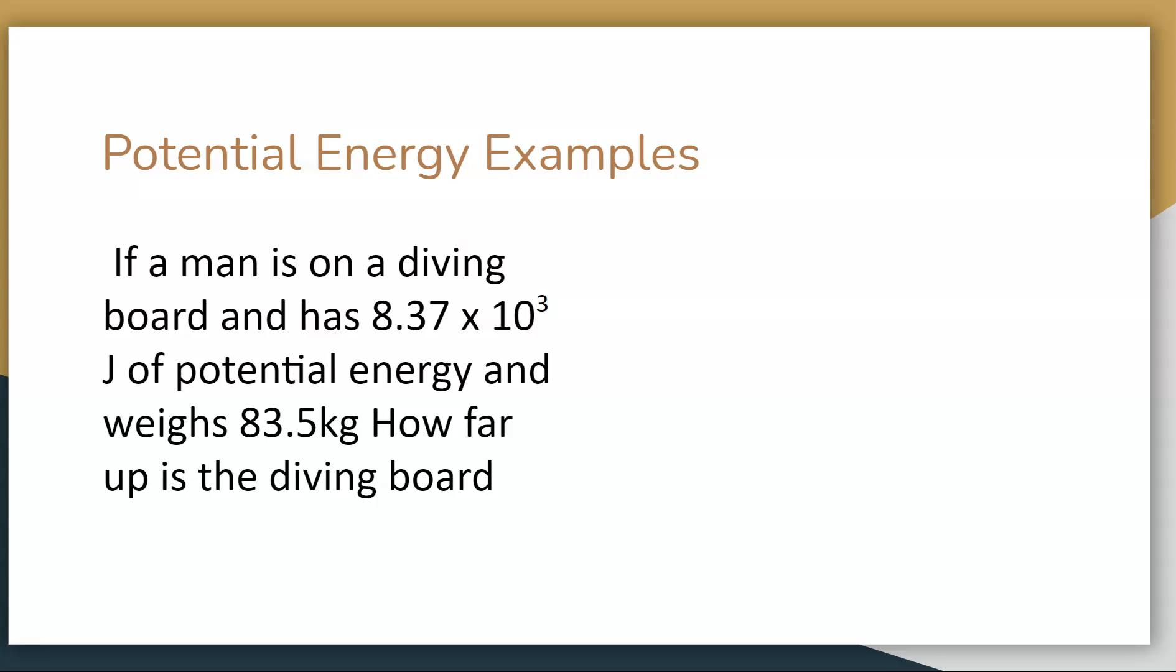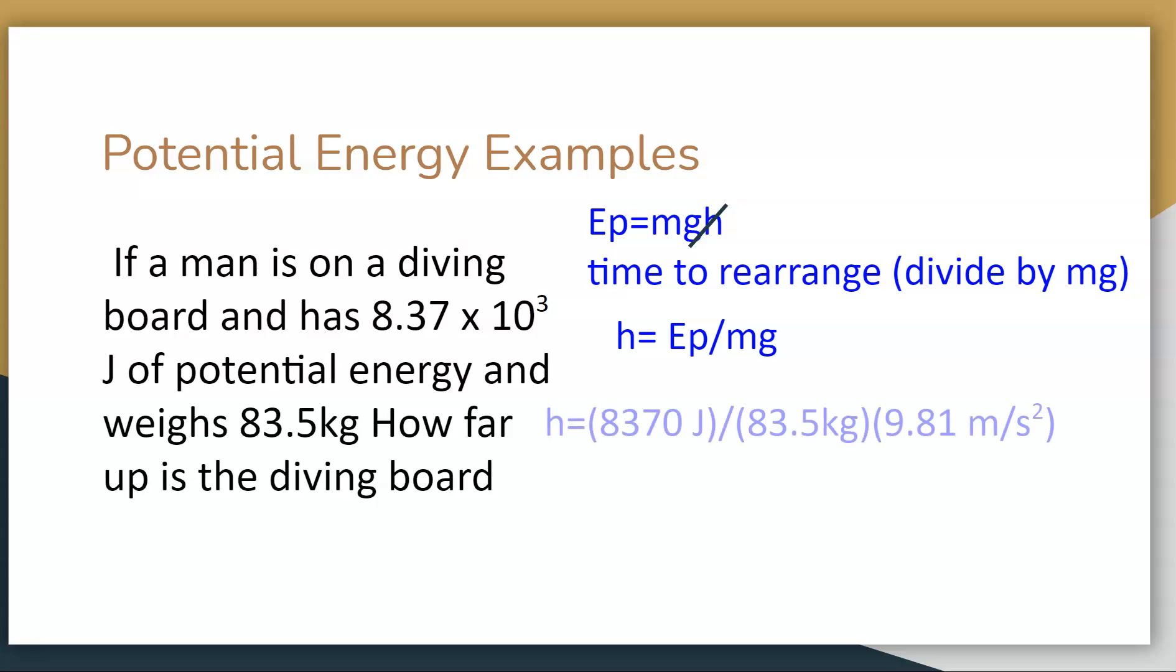If a man is on a diving board and has 8.37 times 10 to the 3 joules of potential energy and weighs 83.5 kilograms, how far up is the diving board? We're going to use the potential energy formula, but this time we need to rearrange for height. So we're going to divide by mass and gravitation. Get rid of them on that side, and we end up with height equaling potential energy divided by mass and gravitational acceleration.